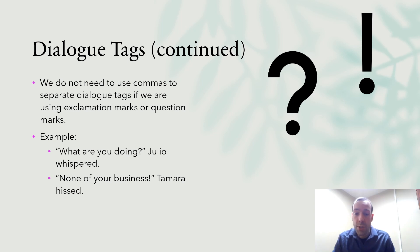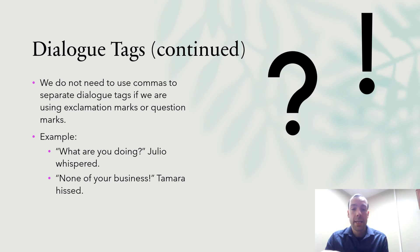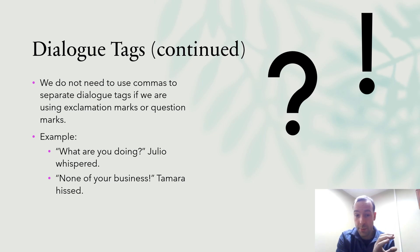For example: 'What are you doing?' Julio whispered. 'None of your business!' Tamara hissed. The first example is a question — it ends with a question mark, so there's no comma, just the question mark, closing quotation marks, and the dialogue tag. The second example is an exclamation — it ends with an exclamation mark, then we close our quotation marks, then we have the dialogue tag. However, if the dialogue tag comes first — Julio whispered, 'What are you doing?' — we would still include the comma.